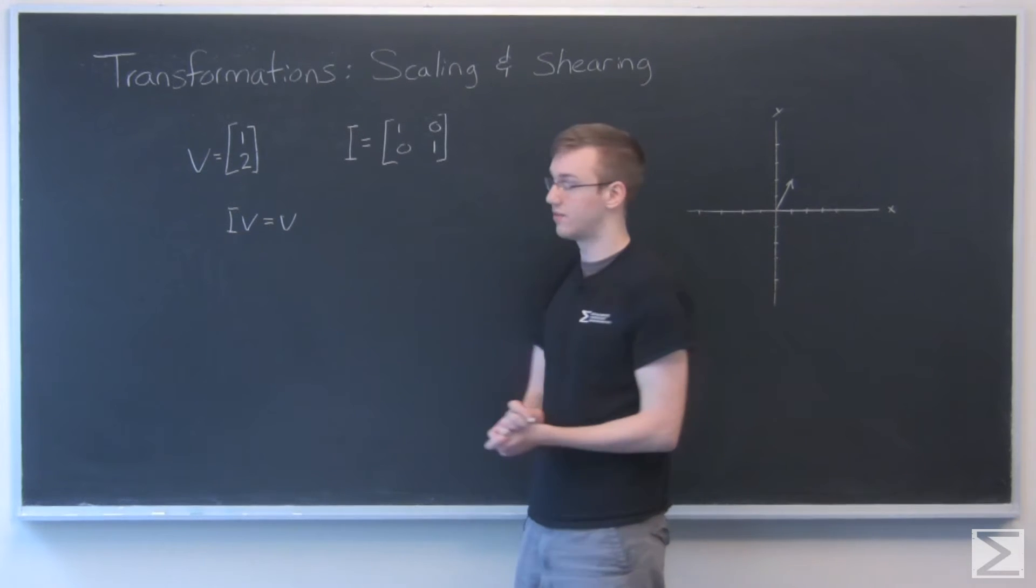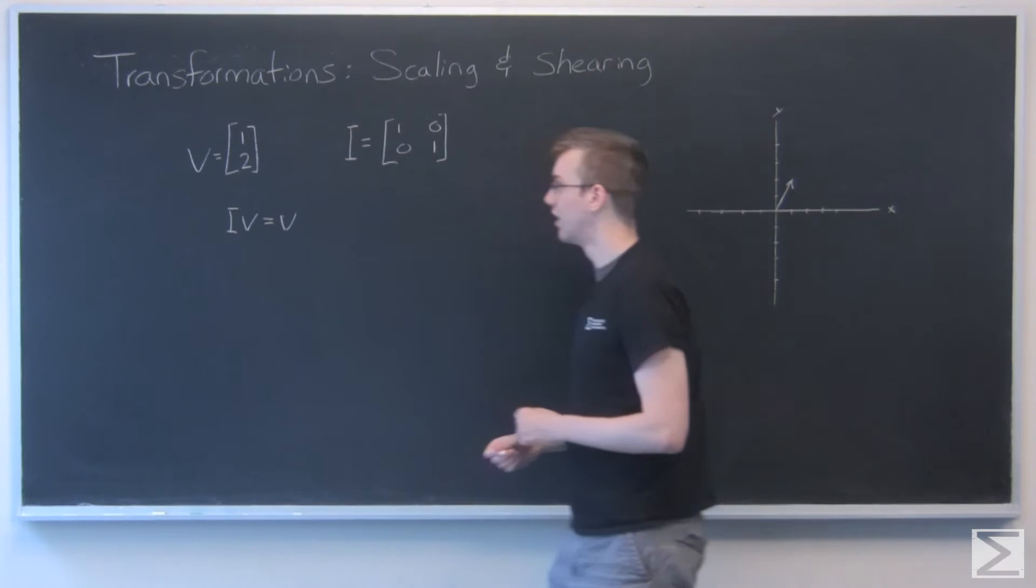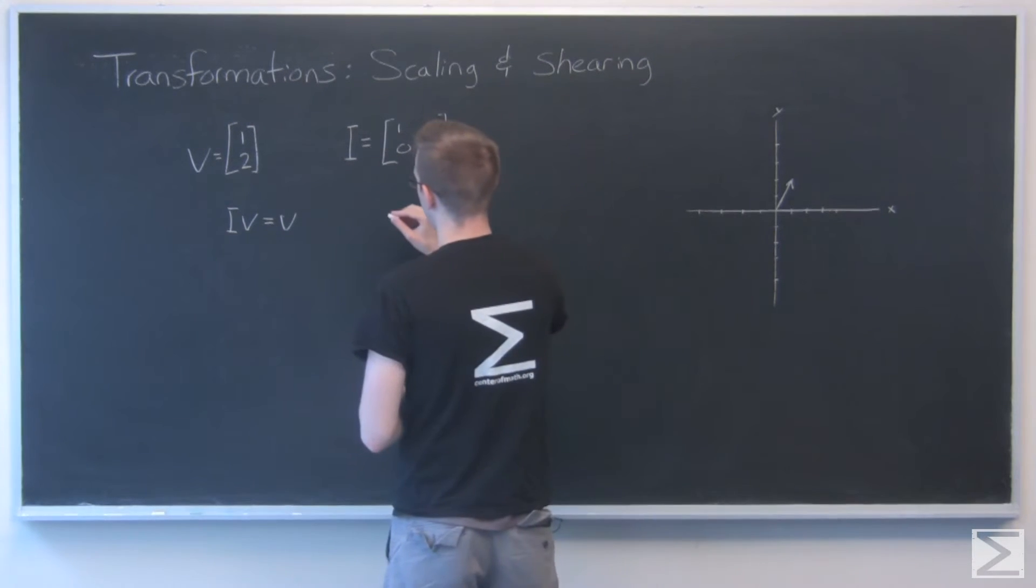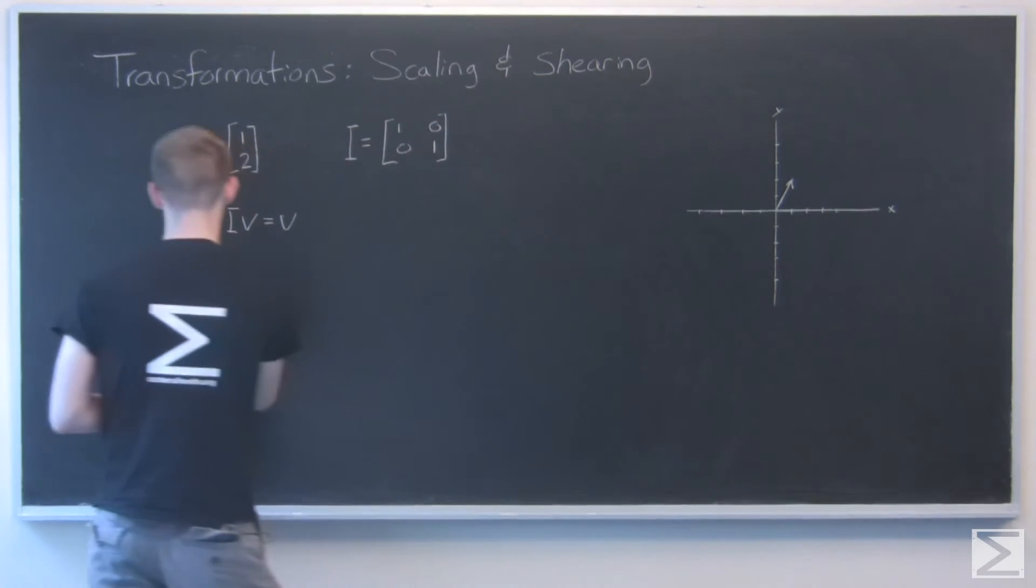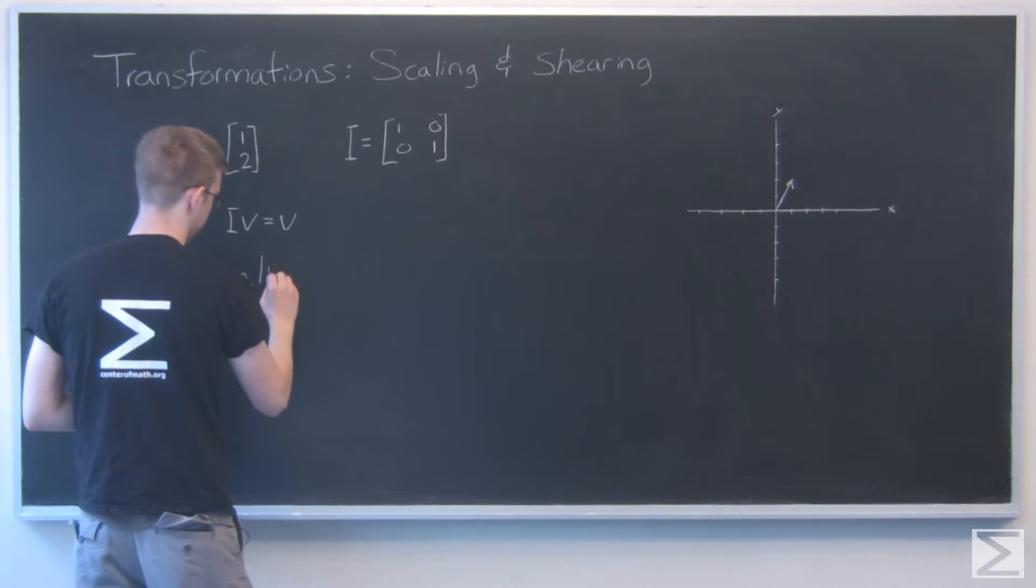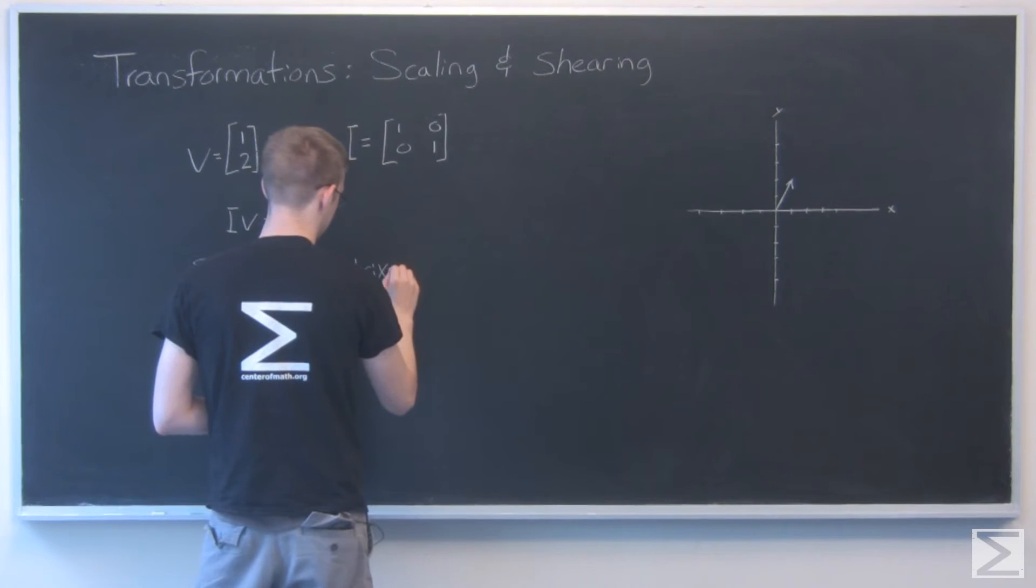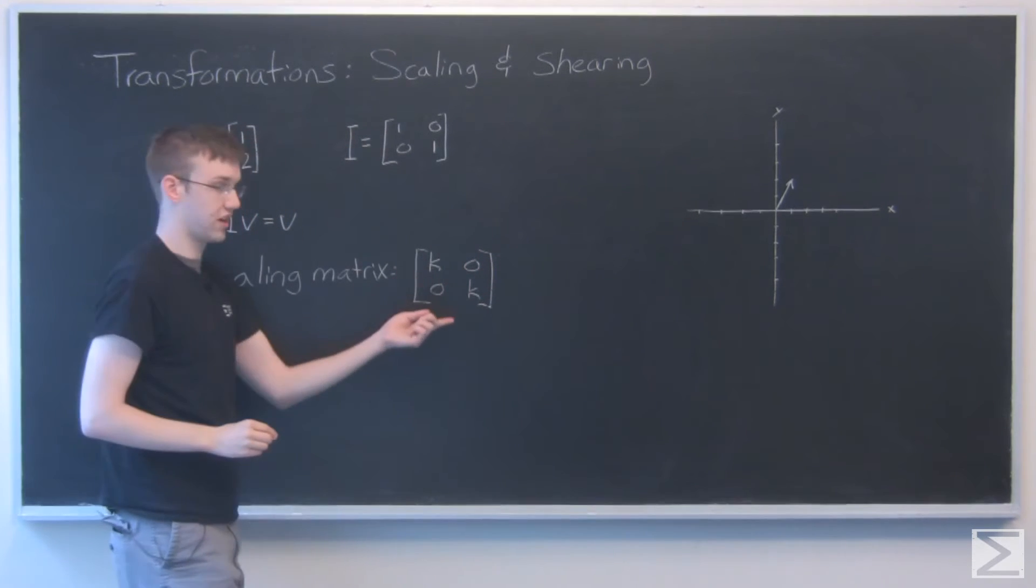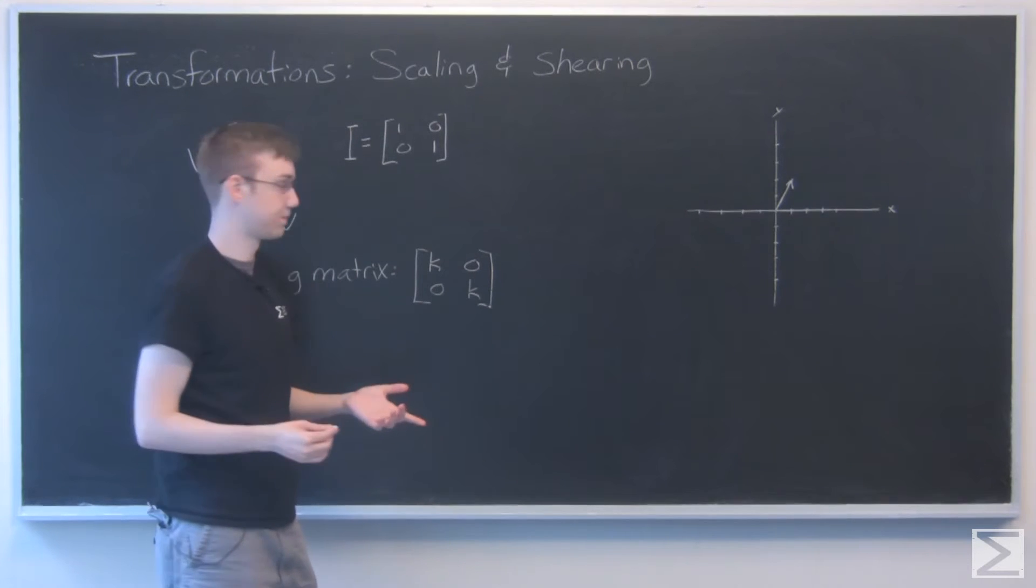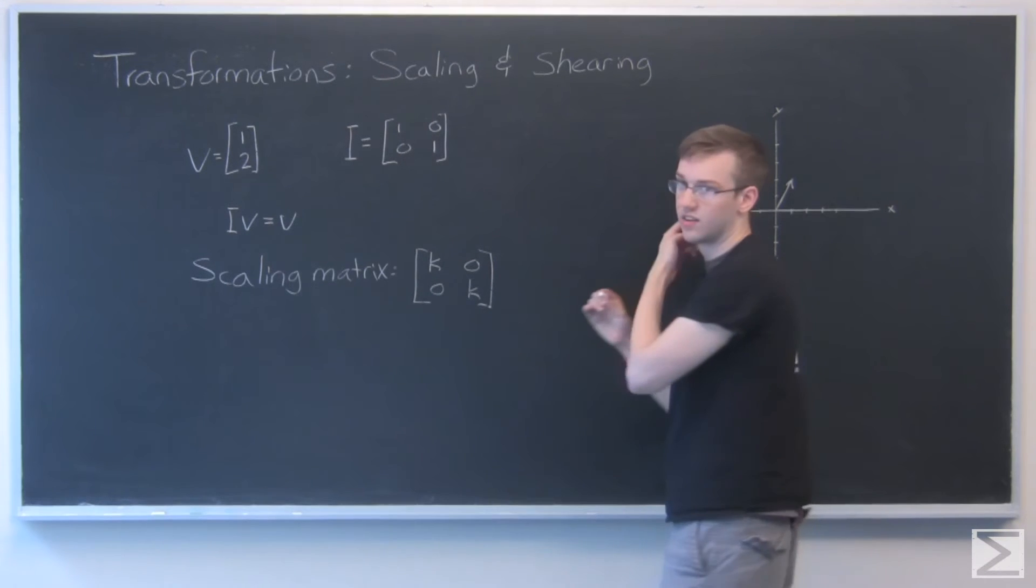So if we want to scale a vector or anything else that we're working with, but here we're working with a 2 by 2 vector, all we need to do is multiply this identity matrix by a constant. So we'll have a scaling matrix that'll look something like this: k, 0, 0, k, where k is the arbitrary value that we're scaling by. Now we can take this matrix and scale our 1, 2 vector. Say we want to scale it by 2.